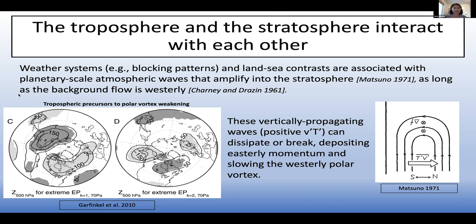We're really talking about fall through spring when the stratosphere can receive these signals from the troposphere. There are well-known patterns associated with the kinds of waves that affect the polar vortex — as shown in Garfinkel et al. 2010, the 500 millibar height patterns that precede polar vortex weakening events show that when you see a strong wave number one type weakening in the stratosphere, you also have a wave number one type pattern in the troposphere driving it, associated typically with blocking over the Aleutian region in the Pacific and over Scandinavia.